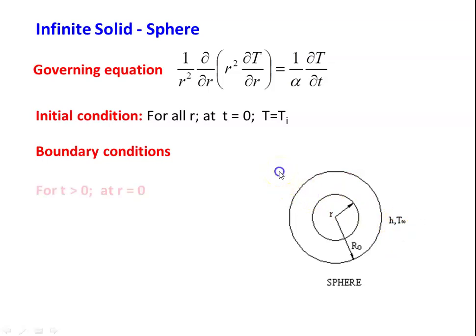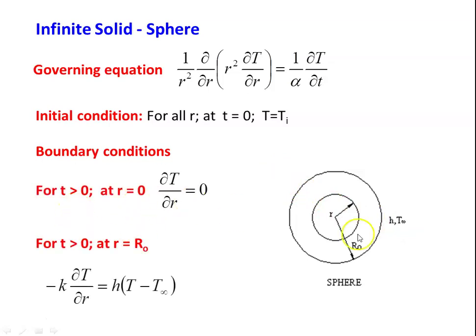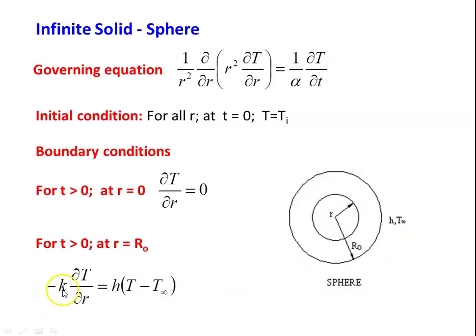The boundary conditions are: at the center of the sphere where r = 0, for time t > 0, the temperature gradient is zero, so ∂T/∂r = 0. On the surface at r = r_o, there is convection with heat transfer coefficient h, so: −k · ∂T/∂r = h · (T − T_∞). This is the mathematical formulation of heat transfer in the sphere.